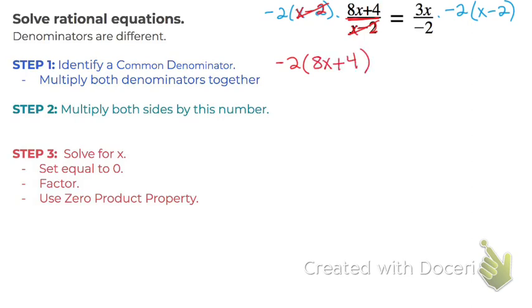And the same on the right side. You have a negative 2 and a negative 2. Anything divided by itself is 1, so we can just cancel that out. So on the right side we have 3x times (x minus 2).